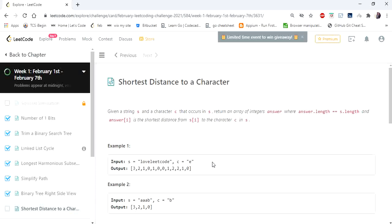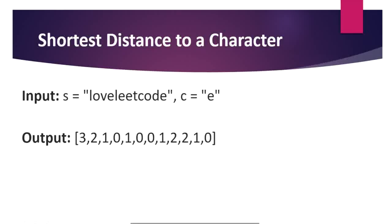Let's understand the problem statement with an example. Here is our given input string s and character c. The character given is e, and we have to return an output array which consists of the shortest distance to that character from every character in the string. Starting from character l, we search for e. E is at the fourth position, so the difference is 3 — the first index has value 3. From o the distance is 2, from v it is 1, and e itself has distance 0.